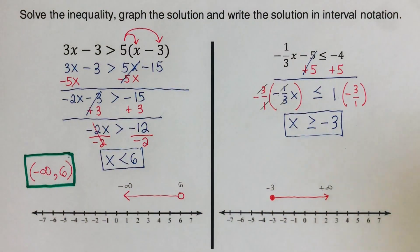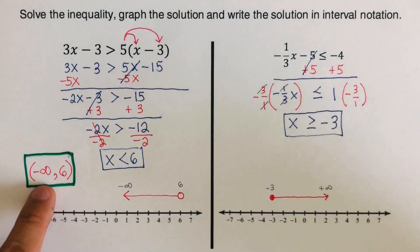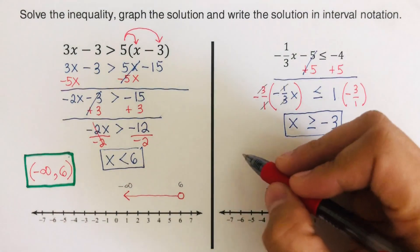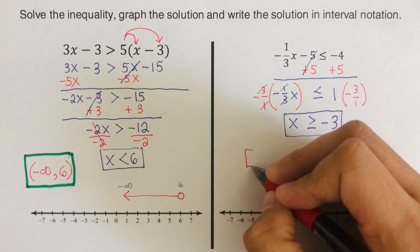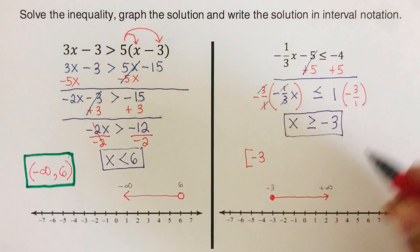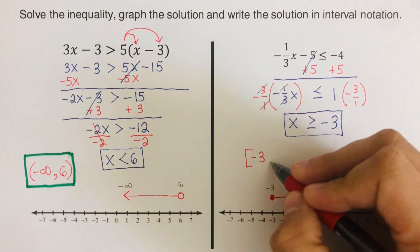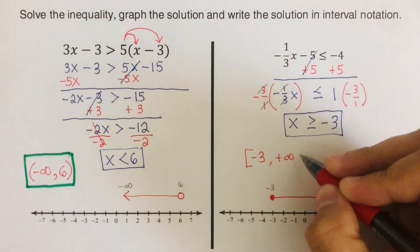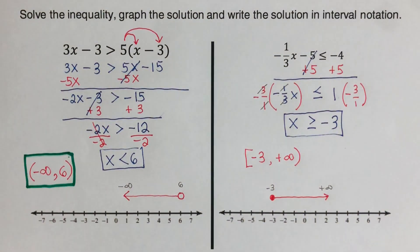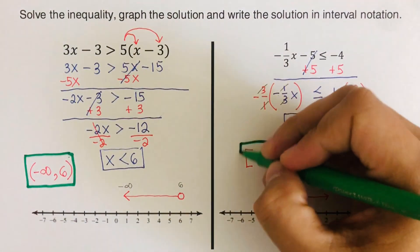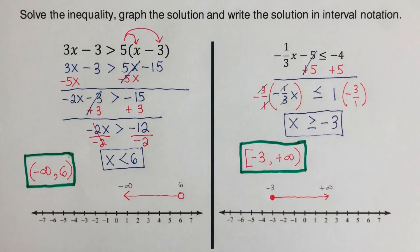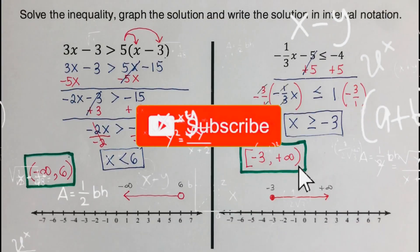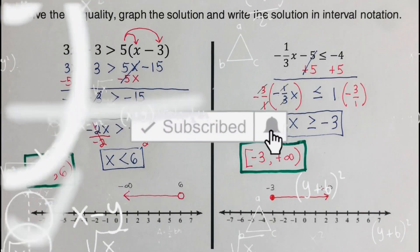This is the inequality we sketch. We use a closed circle on negative 3, and the direction of the arrow is to the right. I draw an arrow directed to the right, and this goes all the way to positive infinity. In interval notation, we start with negative 3 — since it's a closed circle, we use a bracket. Since this goes to positive infinity, we use a parenthesis. So the solution in interval notation is [−3, +∞), and this is the solution in graphing form. If you find this video helpful, hit like and subscribe for more math videos.